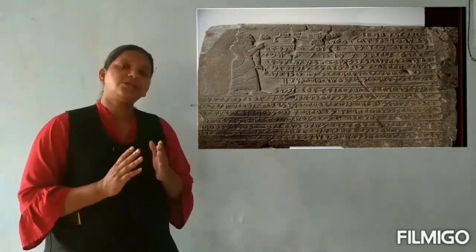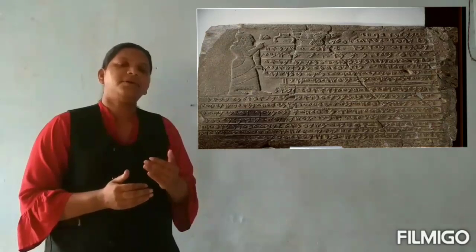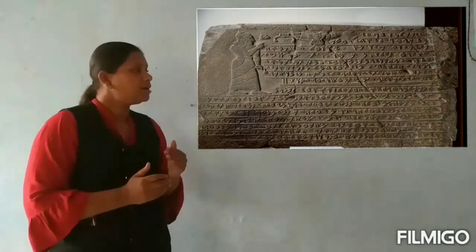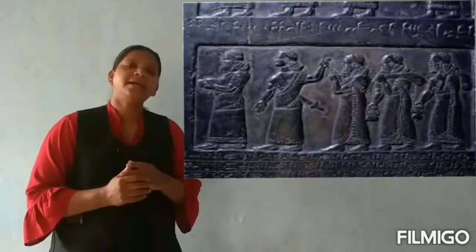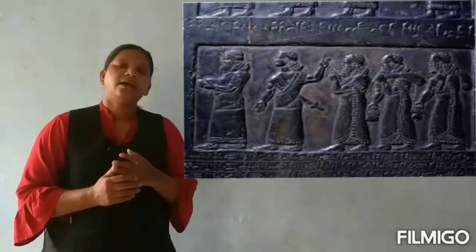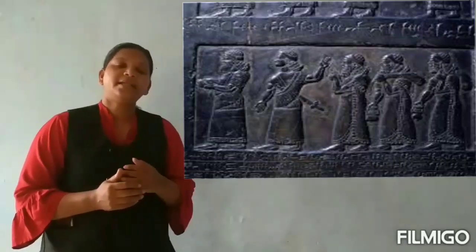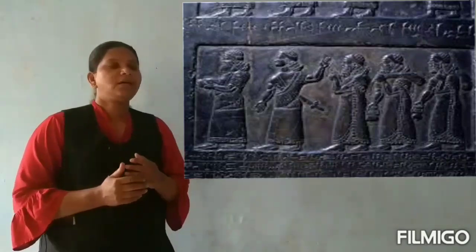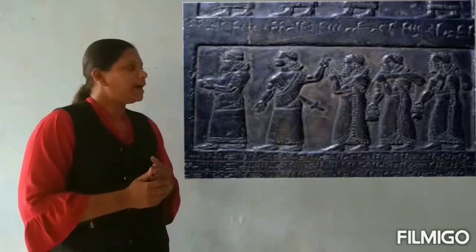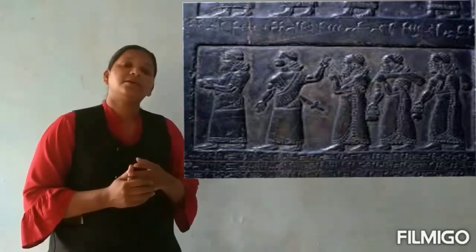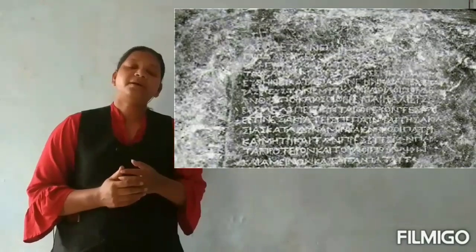Sometimes kings got their orders inscribed in order to make the people see, read, or obey them. Sometimes kings, queens, and other great personalities recorded their achievements. For example, kings often recorded their victories in battles on pillars and rocks — such as the Mauryan emperor Ashoka.